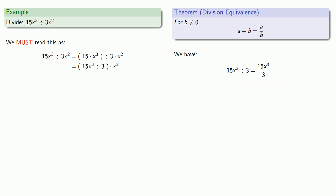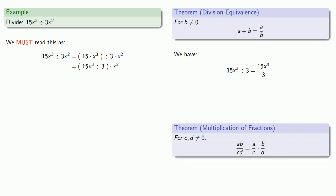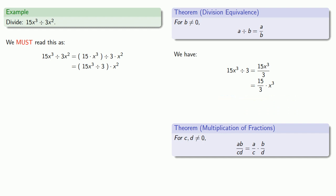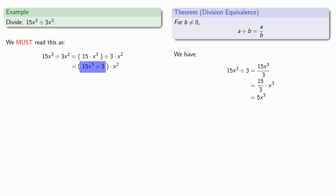As long as our numerator and denominator are factors, we can split the factors into separate fractions. So we'll take the numbers as one fraction, 15 over 3, and the only thing left is the x cubed. We can simplify: 15 over 3 is the same as 15 divided by 3, which is 5. And we still have x to the third. So 15x to the third divided by 3 is the same as 5x to the third.